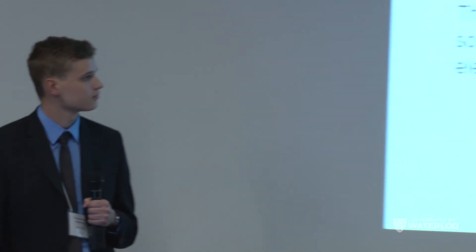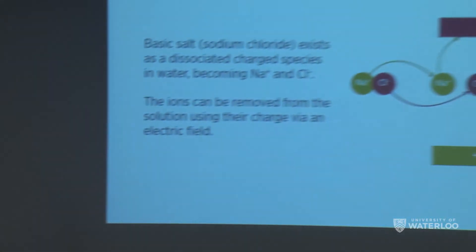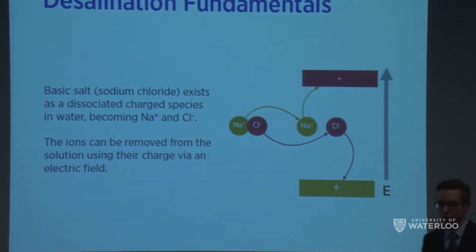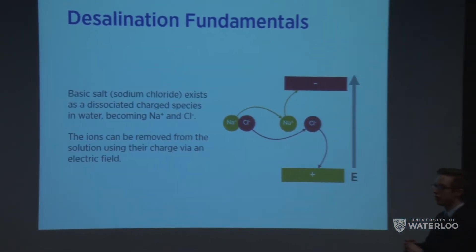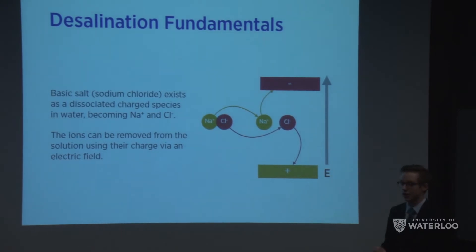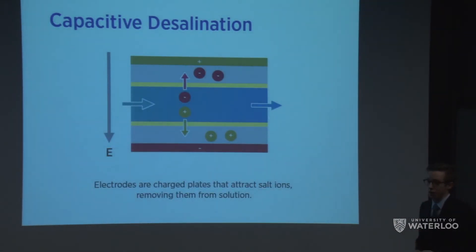What we propose as a solution and an alternative to these applications is a capacitive desalination flow cell with a flowable carbon electrode for continuous operation. Taking a step back to address the fundamentals: if we have salt in water we have it in its ionic form, and we can use electrostatic forces — specifically by applying an electric potential — to move ions in solution. This manifests in one design we're working with: capacitive desalination.